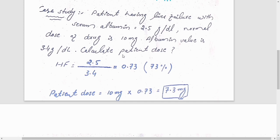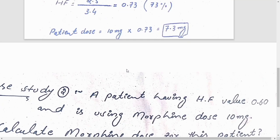We have patient albumin concentration and we have the normal albumin concentration, so we will calculate patient dose. First we will find the HF, which is equal to patient albumin concentration divided by the normal albumin concentration. So by division, we will get the value 0.73, which is almost equal to 73%, so 73% liver is functional. Now patient dose is equal to 10 milligrams multiplied by 0.73. We will get 7.3 milligrams.